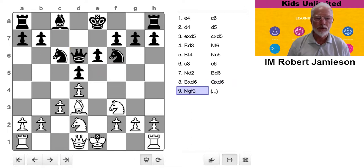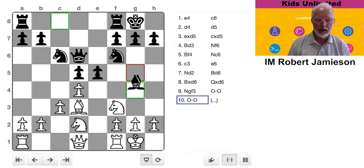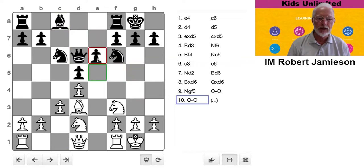Alright. Knight f3, obvious move. He castles. I castle. Alright. Now he has a little bit of a dilemma. He's thinking about what's he going to do with this bishop. So he could park it here. He could try and fianchetto it. Or he could move this pawn again so his bishop could get outside the pawn chain.